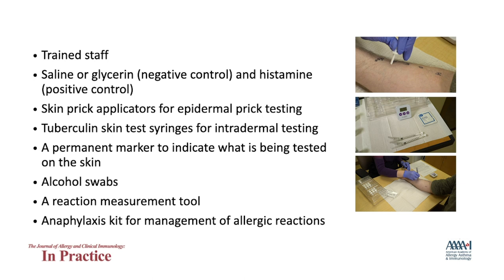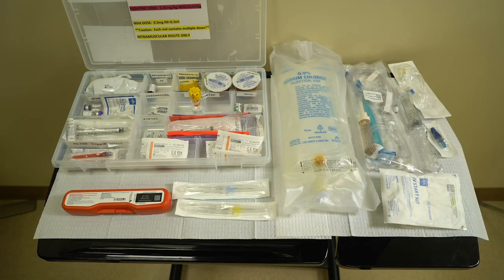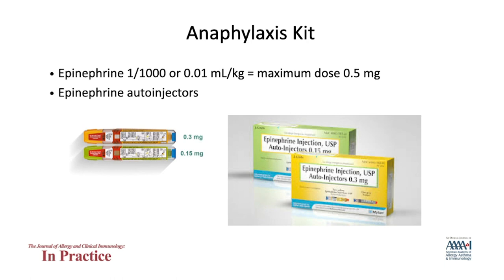An anaphylaxis kit for management of allergic reactions is required. In your anaphylaxis kit, you should include epinephrine 1:1000. If you will draw up epinephrine, include dosing for different weights inside the kit and easily accessible. If you are using an epinephrine auto-injector, make sure you have the right doses for both pediatric and adult patients. Epinephrine is ideally given in the lateral thigh and can be given through the patient's clothing if you have an auto-injector.